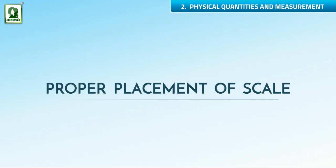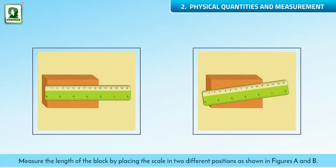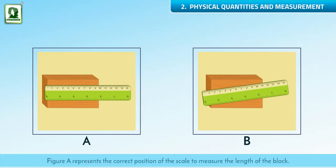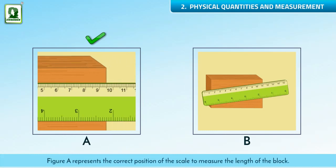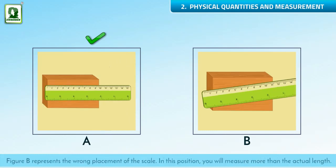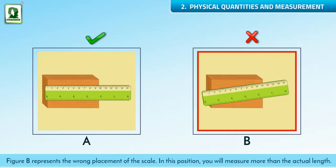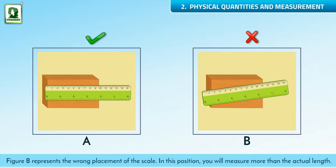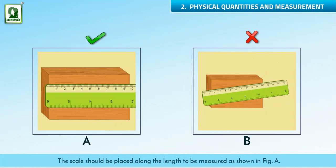Proper placement of scale. Measure the length of the block by placing the scale in two different positions, as shown in Figure A and B. Figure A represents the correct position of the scale to measure the length of the block. Figure B represents the wrong placement of the scale. In this position, you will measure more than the actual length. Hence, for correct measurement of length, the scale should be placed along the length to be measured, as shown in Figure A.